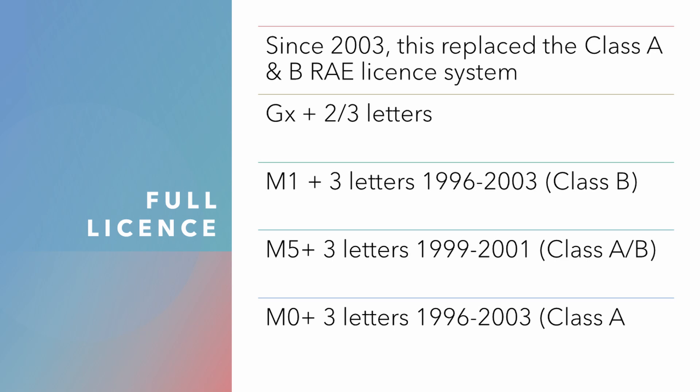The current full licence system dates back to 2003, when it replaced the RAE Class A and B licence system. Until then, it was normal to see UK call signs in the format Golf-3 plus two or three letters. The M1 licence plus three letters was introduced in 1996 until 2003, which was a Class B licence. The M5 plus three letters ran to 2001, which was a Class A/B licence. And M0 plus three letters started in 1996 until 2003, when it was changed to become the full licence.